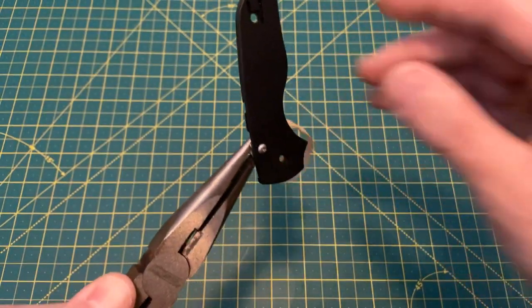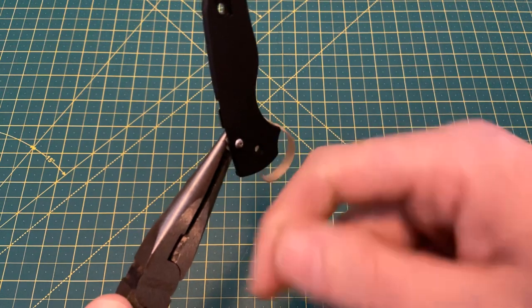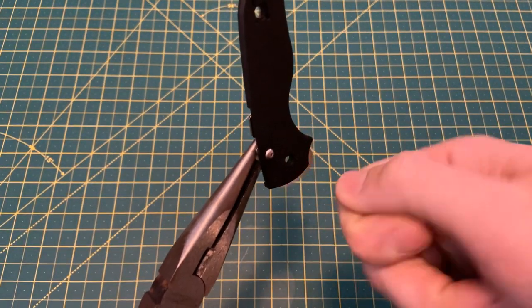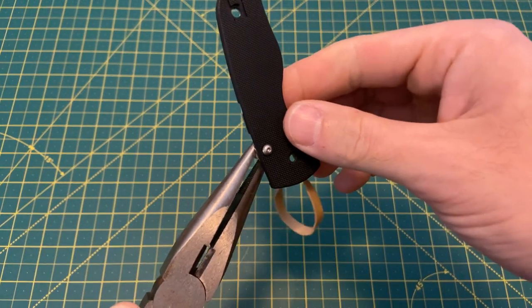So you hold that right there like this, then you take your screwdriver, and while you're squeezing that real hard, take your screwdriver and slowly start to back the screw out, and that will do the trick.